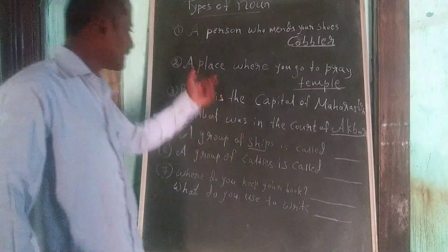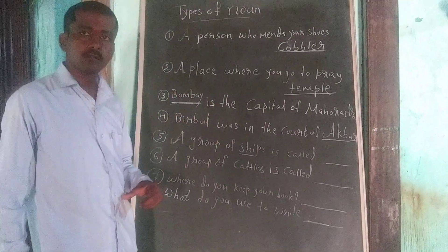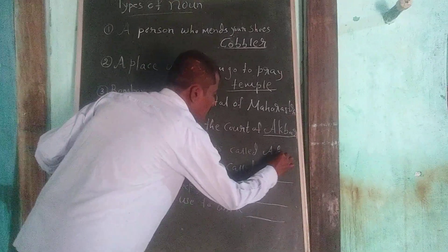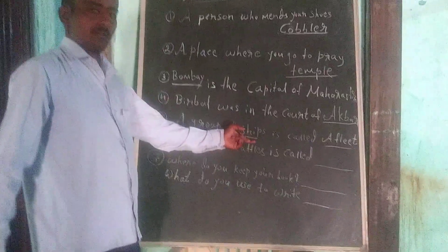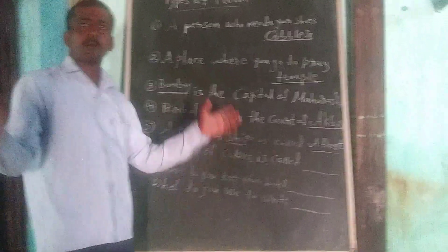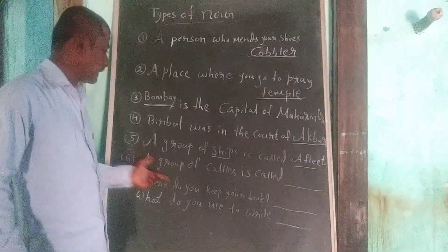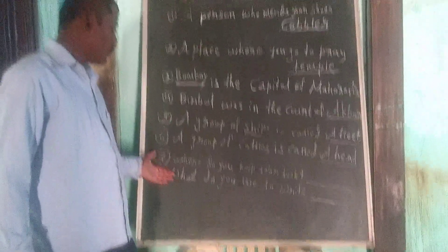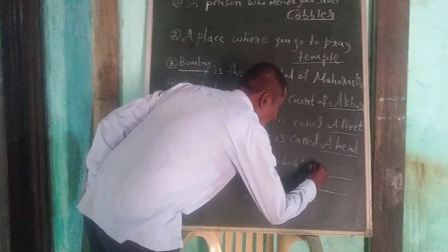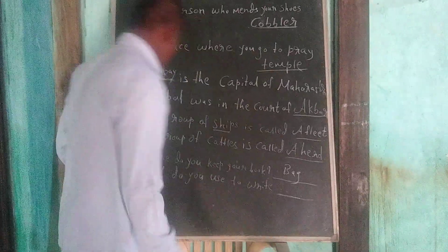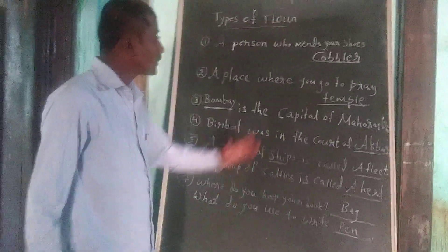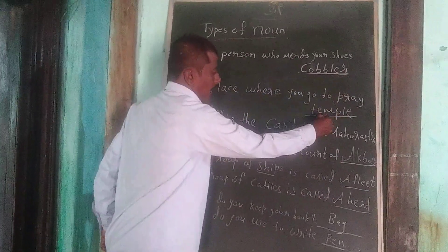Now tell me, children — a group of ships. It's the plural form of noun. A group of many ships — what are they called? A herd of cattle. Then, where do you keep your book, children? Very good — a bag. You keep the book in a bag. Then what do you use to write? A pen, pencil — excellent, very good.